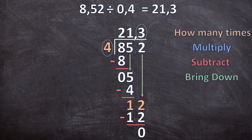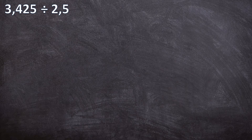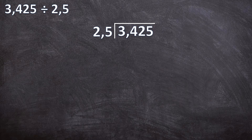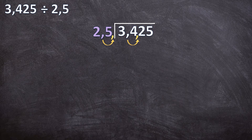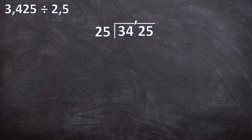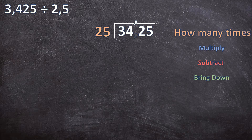Now let's look at the second example: 3,425 divided by 2,5. We set up the problem with our long division bar, the dividend inside the bar, and the divisor in front. Remember, we never want to divide by a decimal, so we make it a whole number first by multiplying by 10 — moving the comma one place to the right for the divisor and equally for the dividend. Now, dividing by a whole number, we write the comma in the answer above the comma in the dividend and ignore the comma in the dividend.